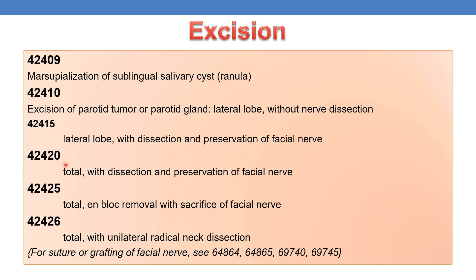CPT 42420 deals with excision of parotid tumor or parotid gland total with dissection and preservation of facial nerve. CPT 42425 deals with total excision with block removal and sacrifice of facial nerve. CPT 42426 deals with total excision with unilateral radical neck dissection. For suturing or grafting of facial nerve, refer to the relevant CPTs.